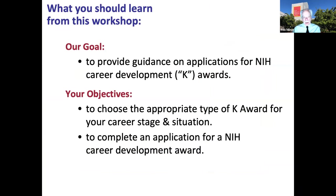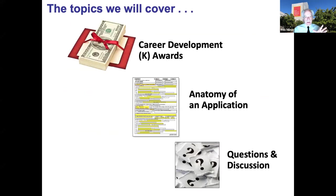You need to think about the appropriate type of award for your particular career stage and situation. As you'll learn, there's a variety of these for different populations of scientists. We will guide you through the application, letting you know what goes where. I'm going to introduce the awards, tell you a little bit about each one, talk about success rates. Then Dr. Lukoski will take you over and do an anatomy of an application, really dissecting what you need to put where in your application in order to be successful.